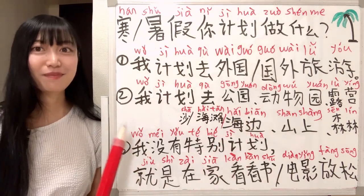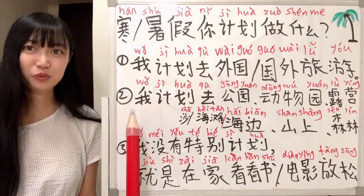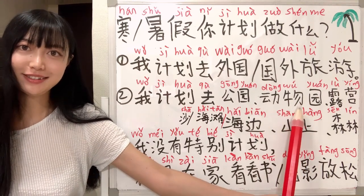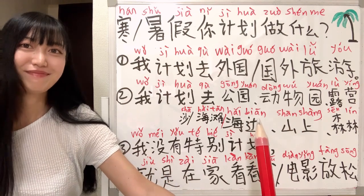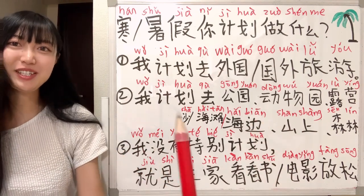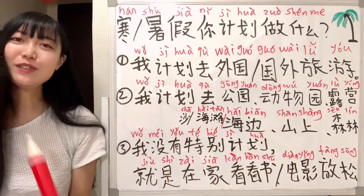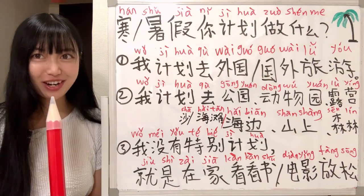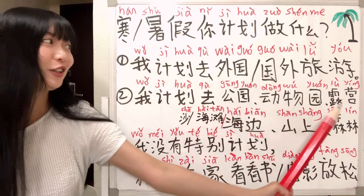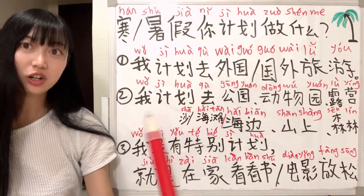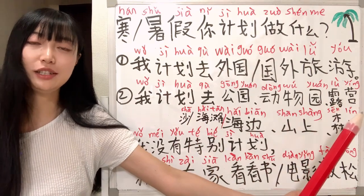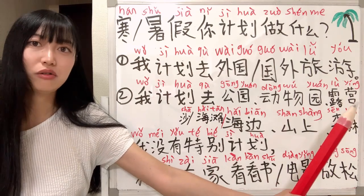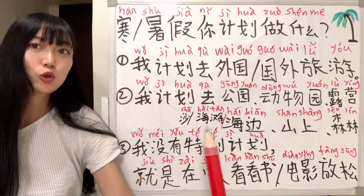You can also say I plan to go to the zoo: 我计划去动物园. 动物 means 'animal', 园 is the yard — a yard with animals is the zoo. And 我计划去露营 means I plan to go camping. 露 means 'outside', 营 is like a tent or camp.